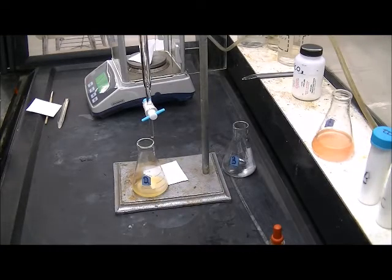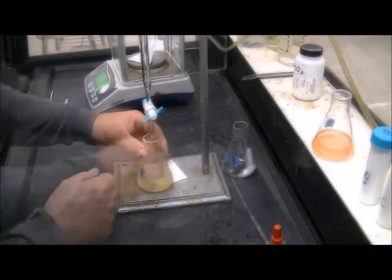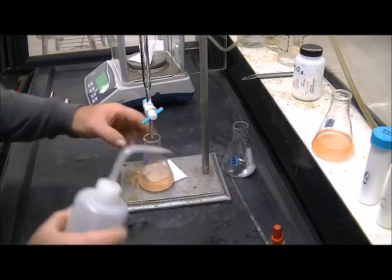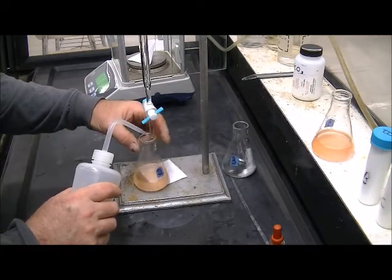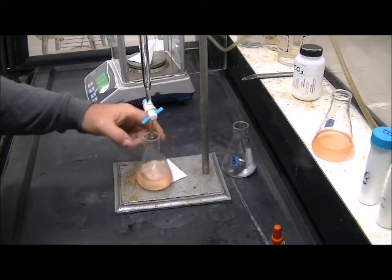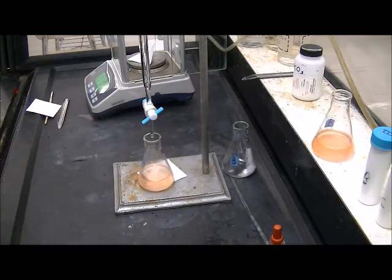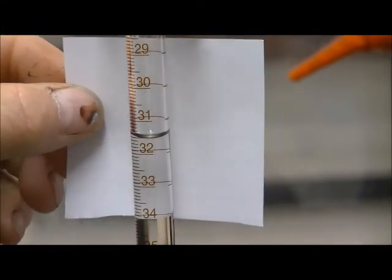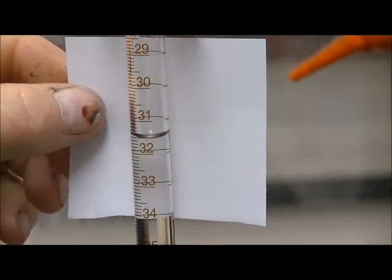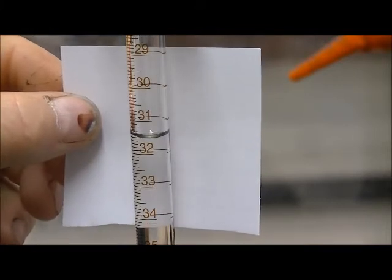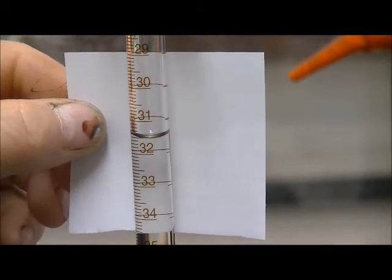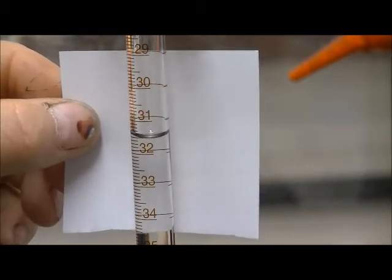This is sample two for unknown A. That might be it right there. It looks good. Everything washed off the sides to make sure. Let's call that the end point right there. And that looks like 31.55 we're going to call that. It's just below the half way mark. So 31.55 milliliters.